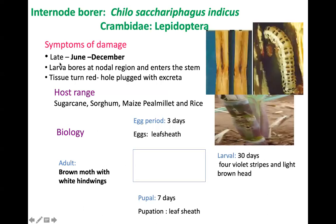Coming to the next pest: internode borer, that is Chilo sacchariphagus indicus, family Crambidae, order Lepidoptera. This pest appears from June to December. Symptoms of damage include larvae boring at the nodal region and entering into the stem between two nodes — that region is called the internode. The larvae feed inside the stem, causing tissues to turn red, and the entry hole is plugged with excreta. Host range includes sugarcane, sorghum, maize, pearl millet, and rice.